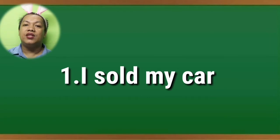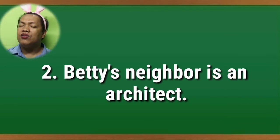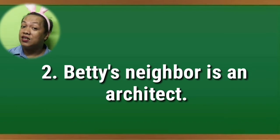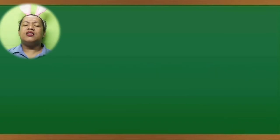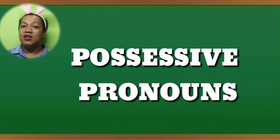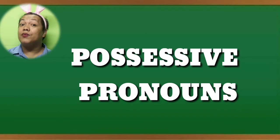Notice that in sentence one there is an underlined word. In sentence two, the underlined word is 'Betty's' — Betty's neighbor is an architect. The possessive in sentence one is called a possessive pronoun. The possessive pronoun in sentence one is 'my.'